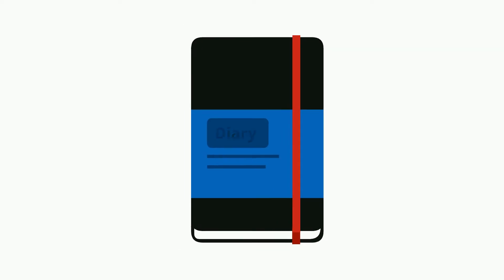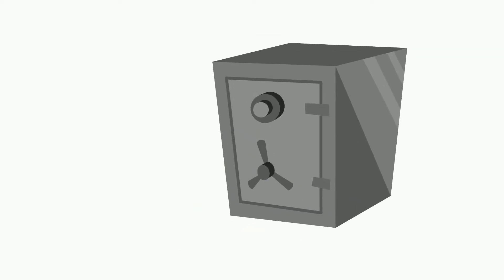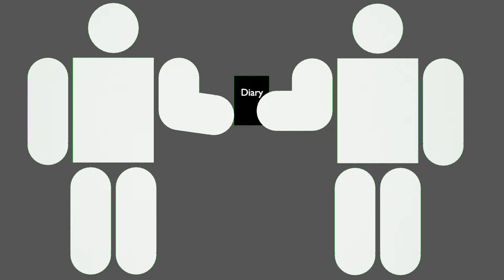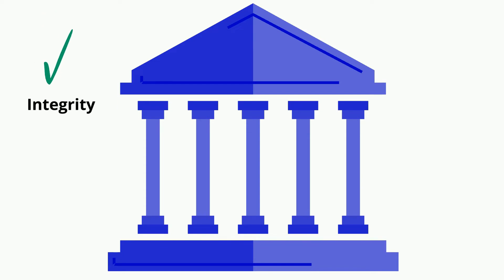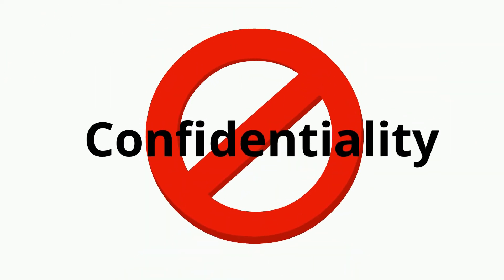Let's say you have a diary of information that you want to keep safe. Like a normal person, you decide to go to a diary bank. Now, let's say that this diary bank has great integrity and great availability, but they don't have great confidentiality. What this means is they store their books in glass containers that turn the pages every once in a while, so anybody can come up and read it.